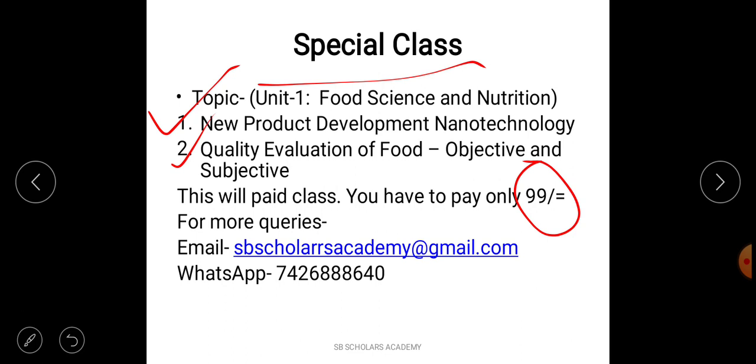If you are interested in this particular class, you can email us. Sorry, there is a mistake in the email. You can email us at sbscholarsacademy@gmail.com. Or you can WhatsApp us. Our WhatsApp number is 7426888640.